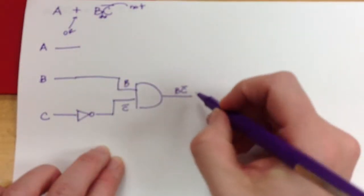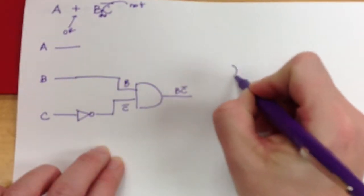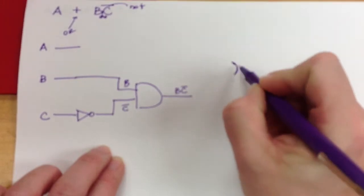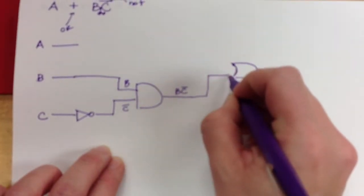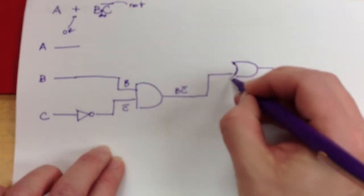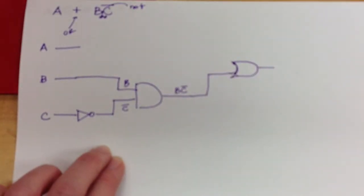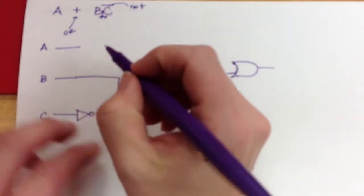Now that goes into one side of an or gate. Like that. And then the other side of that or gate is going to be A.